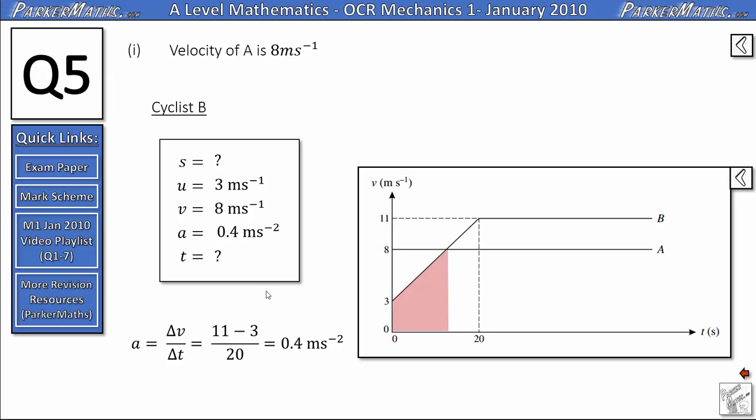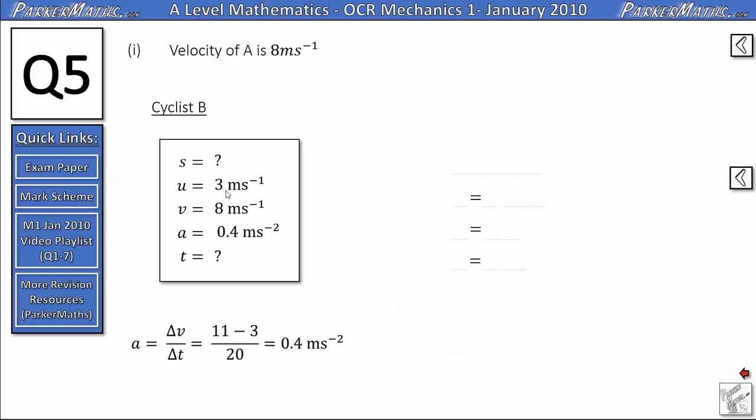We don't know the time it takes, that is what we are trying to work out. So looking at our information we have got V, U, A and we are trying to find T. So we want to use V equals U plus AT. Substituting in the values we get 8 equals 3 plus 0.4T. Subtracting 3 gives 5 equals 0.4T. And dividing through by 0.4 that is the same as doing 50 divided by 4 and we get 12.5 seconds.